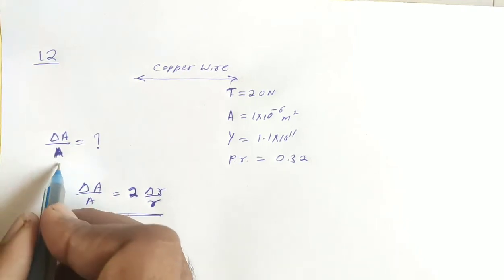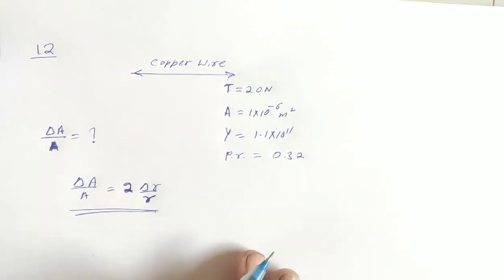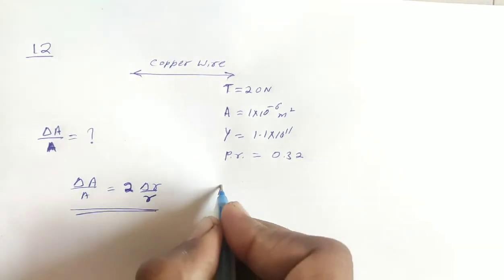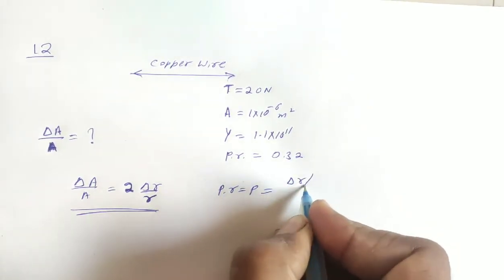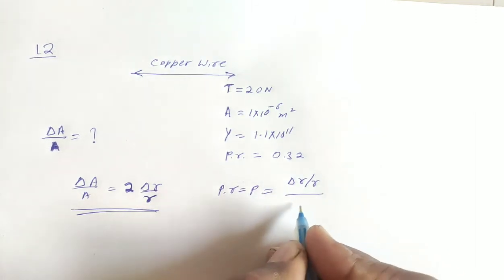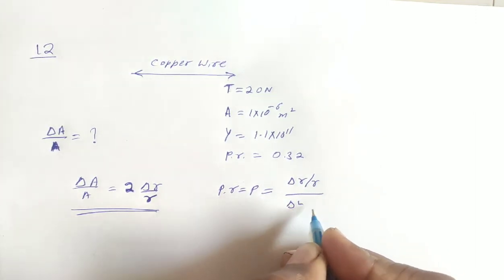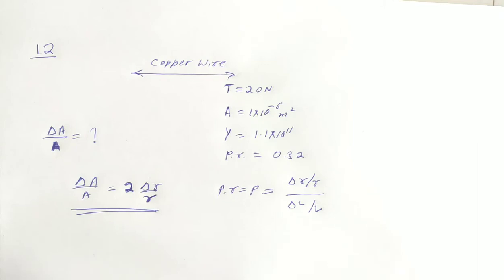We have asked delta A by A and Poisson ratio. What is Poisson ratio? If I denote it, then Poisson ratio is the relative change in error upon relative change in length. Right. This is Poisson ratio.